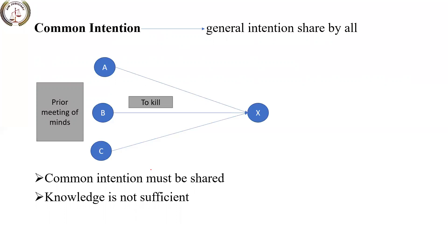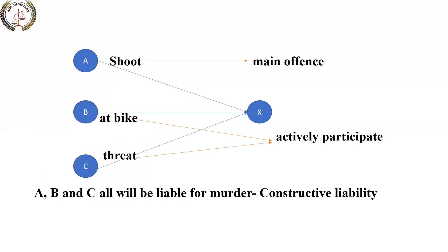Note that knowledge alone is not sufficient. For example, if A, B, and C are present along with D, A, B, and C are not liable under Section 34 for D's act because D has not shared their intention with the three, or the three have not shared their intention with D. There must be mutual sharing of intention. That is common intention.